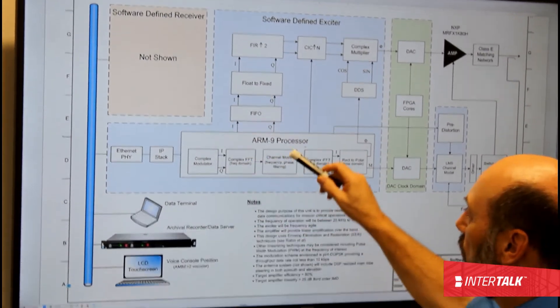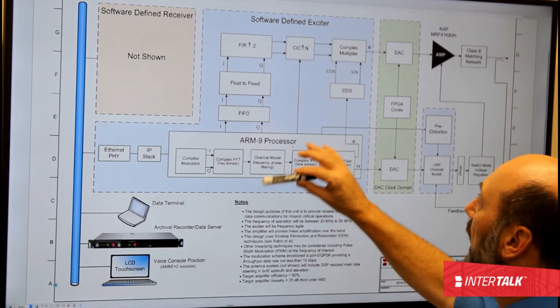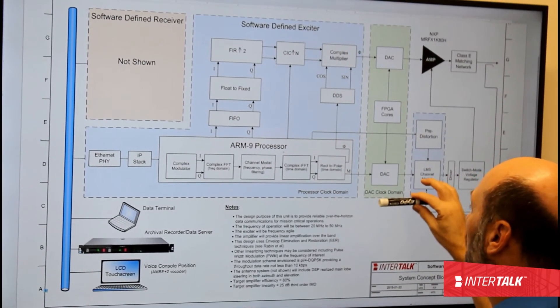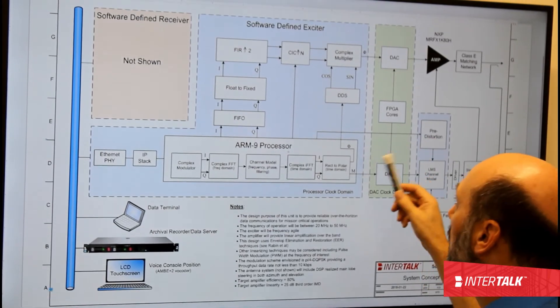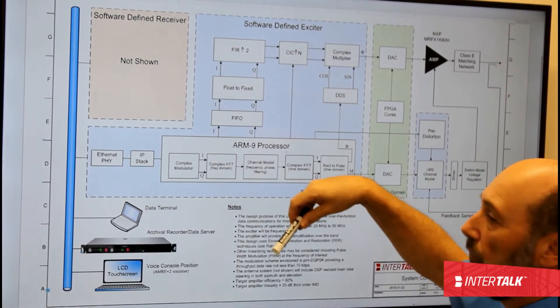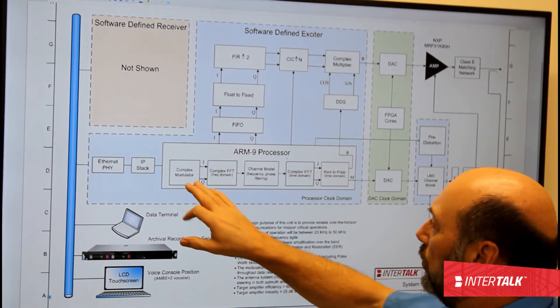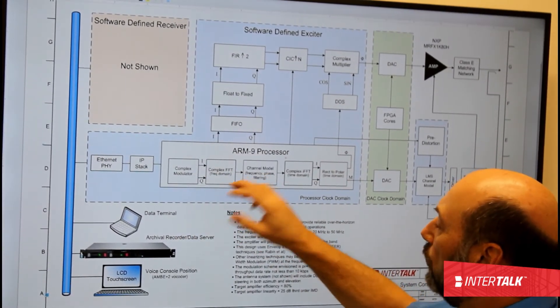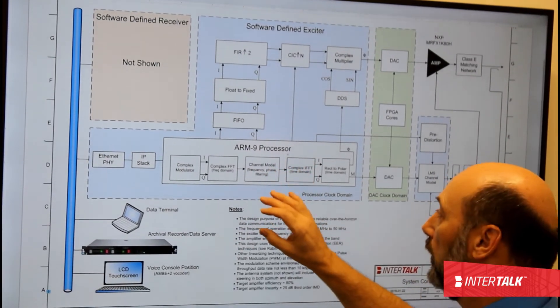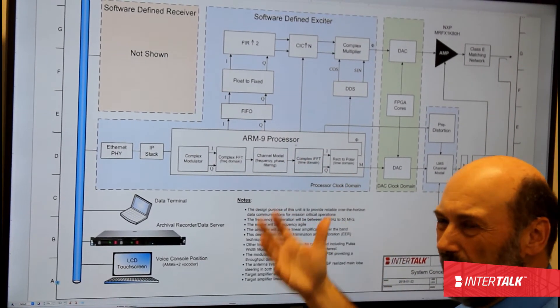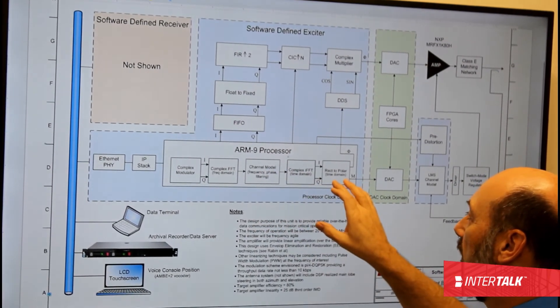If you look here, you can see that we are using an ARM9 processor, which is a digital signal processor. And as well, we are using an FPGA in order to provide the high frequency. We are using a CIC algorithm right here to actually interpolate the signals up to the frequency of interest. And inside the processor here, we are using a mechanism whereby we are taking it into the frequency domain. And a lot of the channel modeling that we are doing, and frequency and phase filtering and so on, we are doing actually in the frequency domain. Then we are taking it back into the time domain.